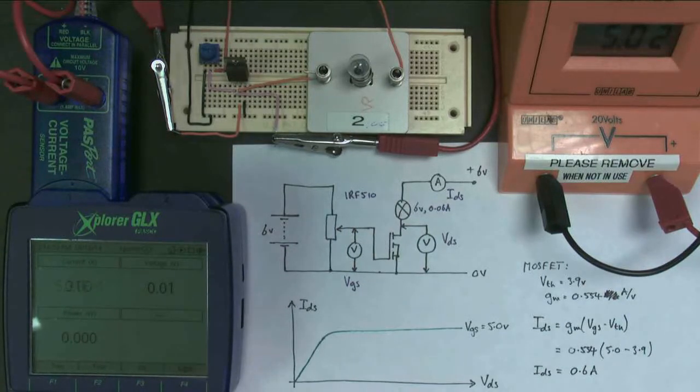So what we're expecting when we turn the power supply on is for a current of 0.6 amps to be recorded here, to flow through the MOSFET and the bulb and light it all up. Let's have a look and see what happens. Turn the power supply on. And there we go. The bulb's lit up. Now, what you'll notice here is the current is actually not 0.6 amps. It's 0.06 amps.